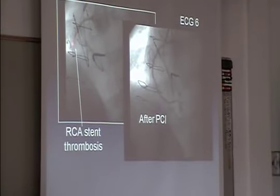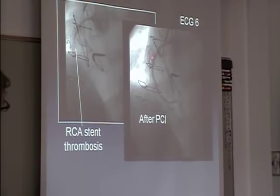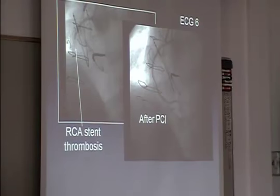So he had a clotted stent. These are all stents here. There's a lot of things in here — sternal wires, a pacemaker atrial electrode, a ventricular defibrillator electrode, and the right coronary artery that's closed right here. So after PCI, this is how it looked. This looks like somebody dropped a toolbox in some of these patients.